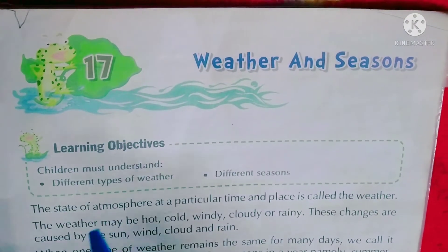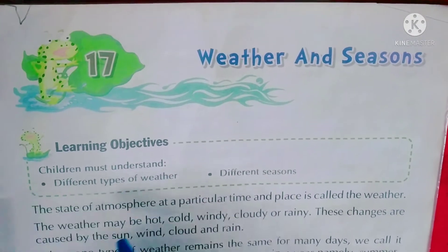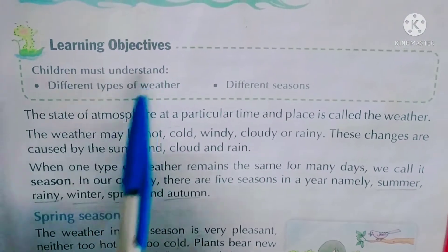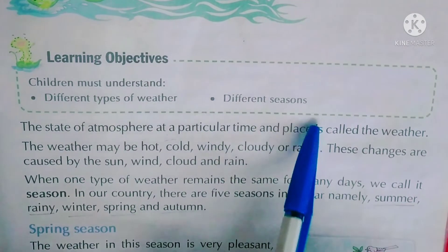Learning Objectives - क्या हमें इससे पढ़कर क्या चीज़ मिलेगी, क्या उद्देश्य है इसका, क्या सीखेंगे हम। Children must understand - बच्चे क्या समझेंगे - different types of weather, अलग-अलग प्रकार का मौसम, और different seasons, अलग-अलग प्रकार की रितू।